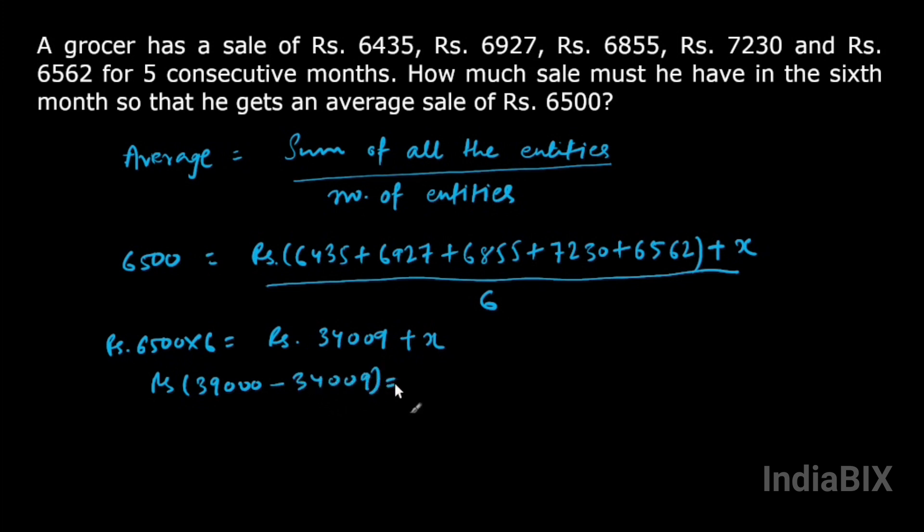Minus 34009, and now we can get the value of x. So the value of x will be rupees 4991.